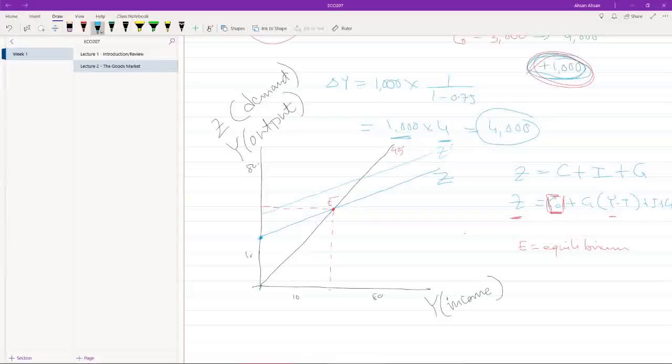It would shift up by a thousand, so what we would see is something like this: z prime. This rise is worth a thousand - the curve has shifted up. And this is now the new equilibrium, e prime.